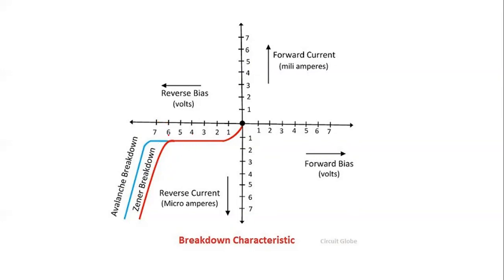For avalanche breakdown, it is only above six volts that you experience the breakdown. So whatever the mechanism, after a particular voltage the reverse current increases very sharply for a very small variation in reverse voltage. These are the two mechanisms — avalanche breakdown and Zener breakdown. In the next lecture we will discuss more about Zener diodes and their features and practical applications.